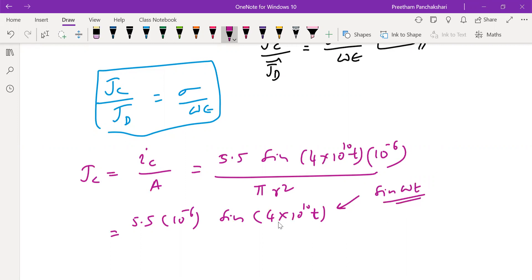You can also observe here, you can think of the standard form sin ωt, so omega in this problem is 4×10^10 which can be used if required.